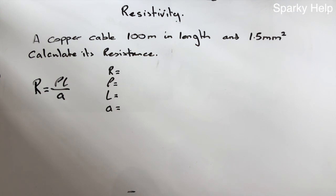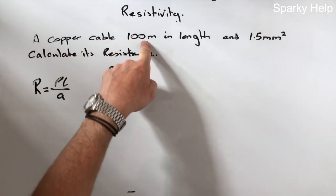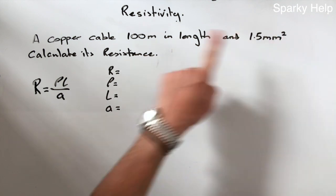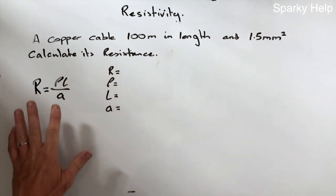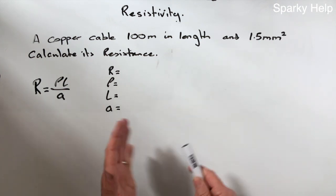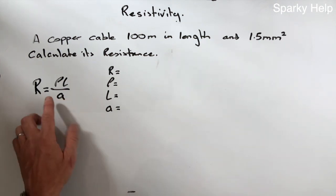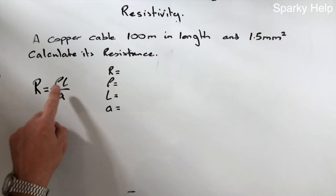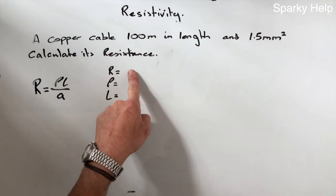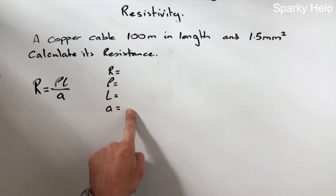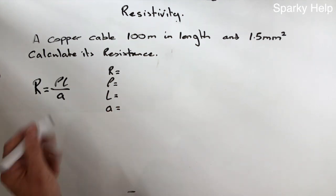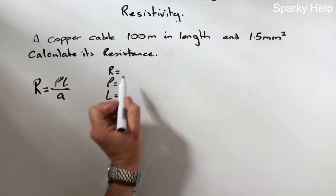OK, so here's a question. A copper cable, 100 meters in length and 1.5 millimeters squared, calculate its resistance. Here's our formula. We are going to ignore temperature completely, so we will keep it standard. So R is equal to rho times L divided by A. I always like to lay these out here so I can find out what I've actually got. So resistance is what we are trying to find, so that's our unknown.